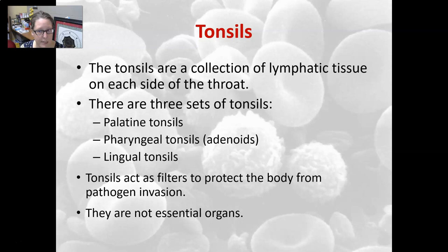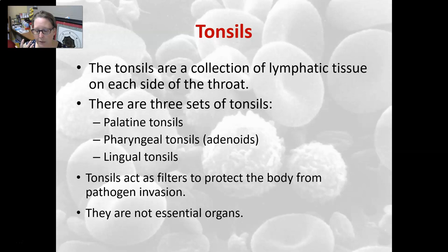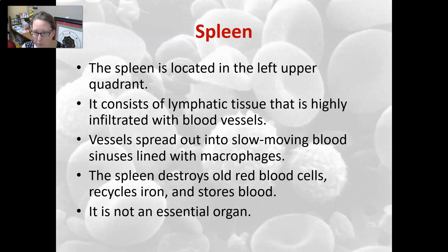The tonsils are a collection of lymphatic tissue on each side of the throat. There are three sets: the palatine tonsils, which a doctor examines when looking for white patches or redness indicating strep throat; the pharyngeal tonsils, often called adenoids; and the lingual tonsils on both sides of the tongue. The tonsils act as a filter to protect the body from pathogen invasion, but they are not essential organs, which is why they can be removed if they are a source of recurrent strep throat.